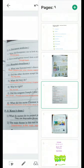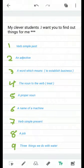So, wait for me. Please, study well. And the last thing, as a homework. I know that you are all the best, of course. Please, from the text, pages 94 and 95, I want you to find out these things. I need a verb simple past, an adjective, a word which means to establish business, the noun to the verb treat, a proper noun, a name of a machine, verb simple present, a job. Three things we do with water.